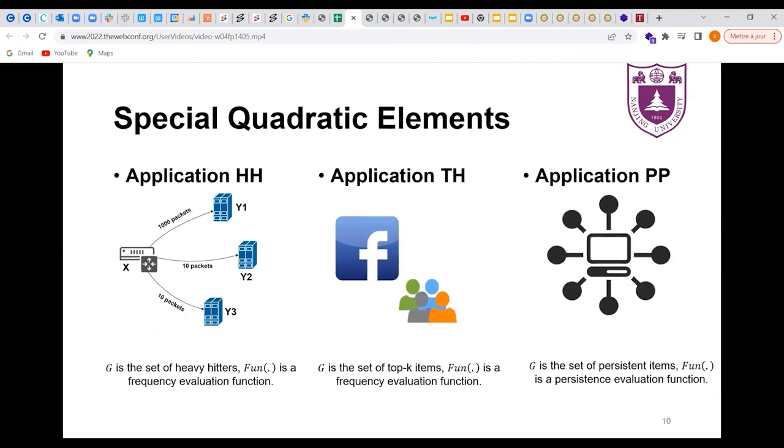Finding special quadratic elements has many practical applications. Based on the typical special items mentioned before, we focus on three important applications. The first one is HH, for which G is the set of heavy hitters, and f is the frequency evaluation function. As explained in the previous example, operators are interested not only in the source IP that sends a large volume of traffic, but also in where most of the traffic is going.